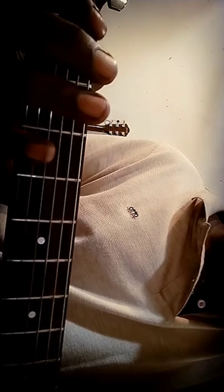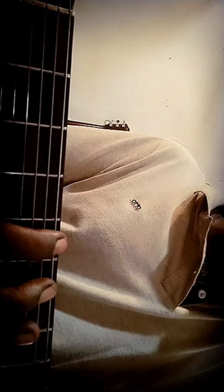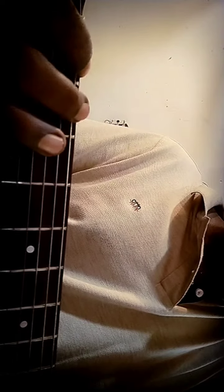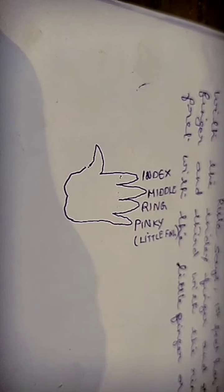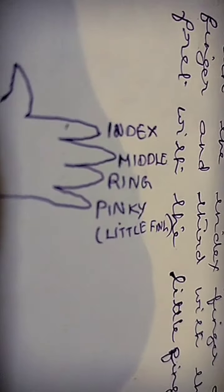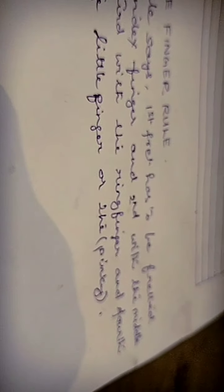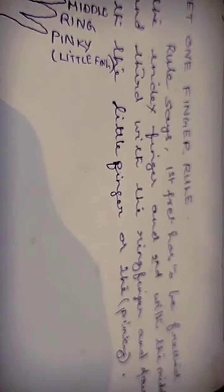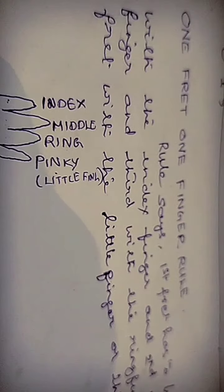So you play one note with your index, then with your middle, then with your ring, and then with your pinky. After that you have to do the shift play — the index is shifted to the fifth fret. Go to your notebook and draw this picture and mark index, middle, ring, pinky or the little finger, and write down the one fret, one finger rule. This is followed all over the world by guitarists.